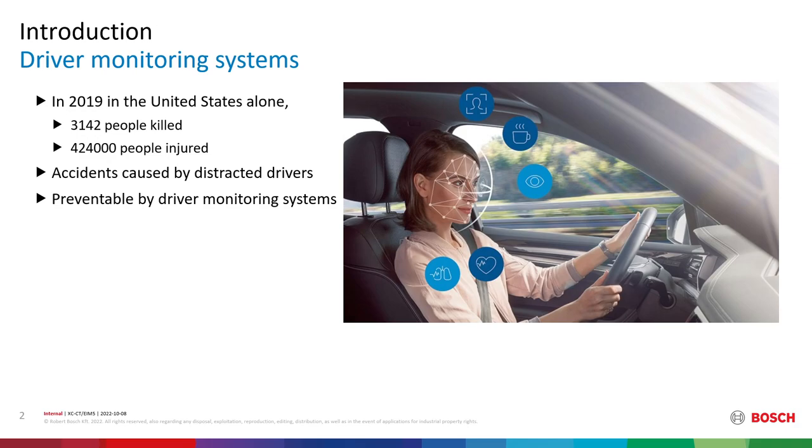In 2019, just in the United States alone, 3,142 people were killed and 424,000 people were injured in accidents caused by distracted drivers. A bulk of these accidents could have been prevented by driving monitoring systems. Therefore, it is a growing need in the automotive industry to create safer cars and ensure driving safety. NCAP will grant from 2025 2 out of 5 stars for the driving monitoring systems of the cars. A subsystem of such system is driver behavior detection.